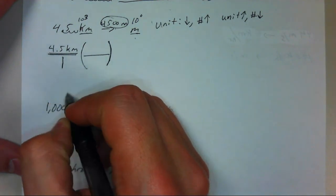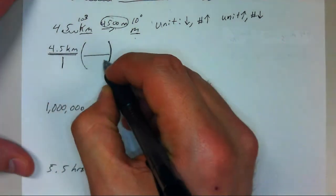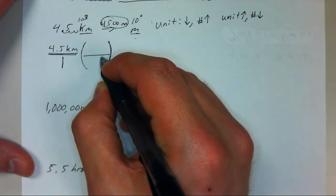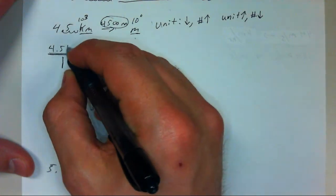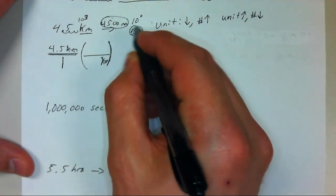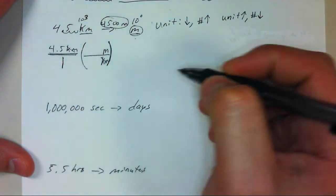Kilometers is on top because there's an understood 1 on the bottom. So we want to put kilometers on the bottom over here because if kilometers is on the bottom and the top, they can cancel out. And we want to go to meters. So we're going to put meters here on the top.